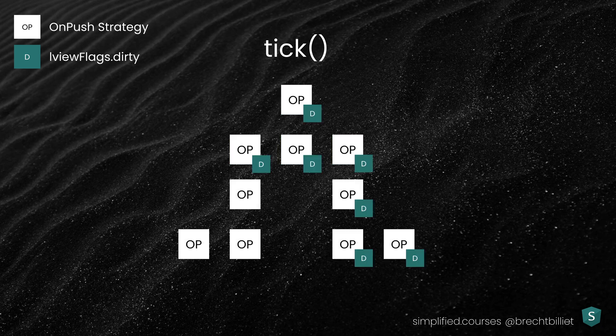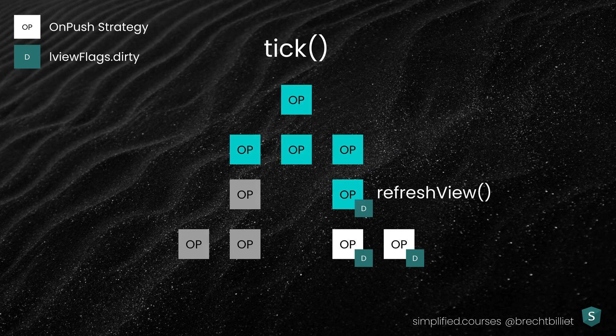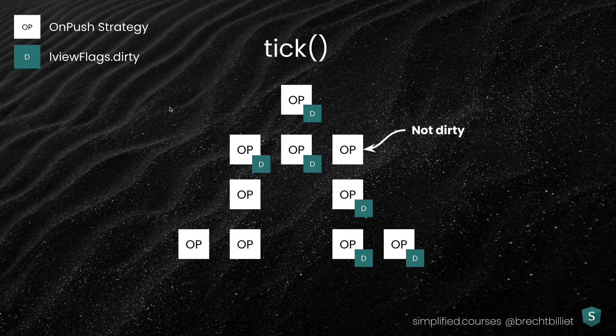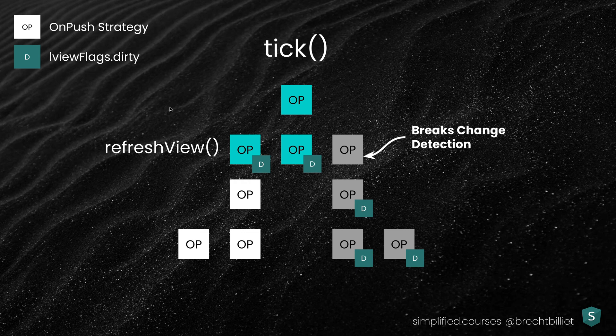When running Change Detection, it starts by calling refresh view on the top view, then traverses to its children and their children from top to bottom. We must ensure that if we mark a view as dirty, its parents are marked as dirty as well — otherwise the chain will break. We can see that refresh view is called on the top view but the chain breaks if an intermediate view is not marked dirty.